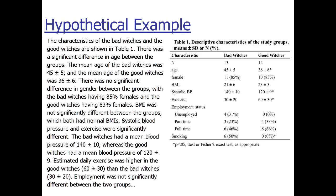Then the author goes through reading line by line: 'There was a significant difference in age between the groups. The mean age of the bad witches was 45 and the mean age of the good witches was 36. There was no significant difference in gender, with bad witches having 85% females and good witches having 83% females. BMI was not significantly different. Systolic blood pressure and exercise were significantly different.' The author is literally just reading the table for the reader. Give your reader a little more credit — the reader can get all those details. You need to provide a higher-level summary.